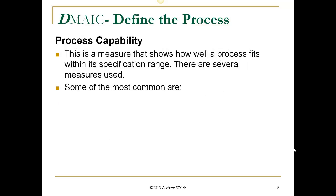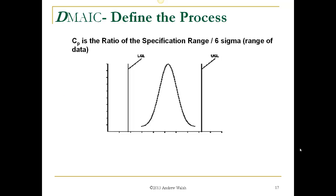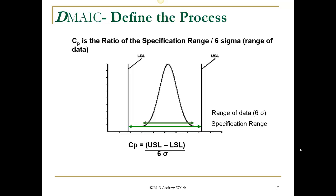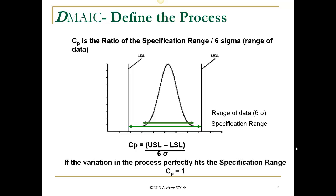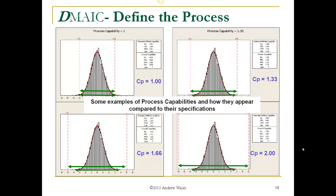Process capability, which we've already talked about, is a measure that shows how well the process fits within its specification range. The most common measures are CP (basic process capability), CPK (process capability index), PP (process performance), and PPK (process performance index). These are very closely related — one looks at the short term and one at the long term. CP is the ratio of the specification range to six sigma, or the range of the data. Process capability equals the upper specification minus the lower specification, divided by six sigma. If the variation of the process perfectly fits the specification, the process capability is one.